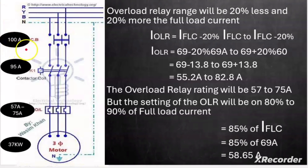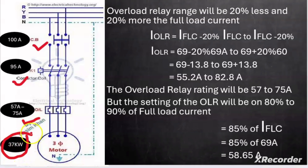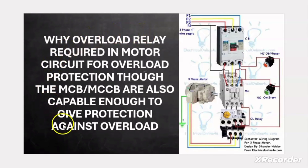To summarize: for a 37 kW motor, the circuit breaker rating is 100A (C type MCCB), the contactor rating is 95A (AC3 type), and the overload relay range is 57A to 75A set at 58.65A. I hope you clearly understood this topic.